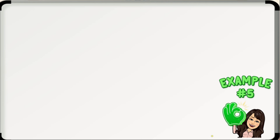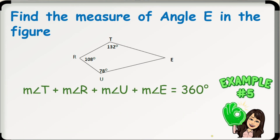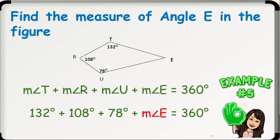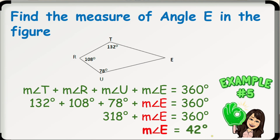Example number 5: Find the measure of angle E in the figure below. The sum of the measures of the interior angles of a convex 4-sided polygon is 360 degrees. Adding the given measures in the figure: 132 degrees plus 108 degrees plus 78 degrees plus the measure of angle E equals 360 degrees. Combining like terms: 318 degrees plus the measure of angle E equals 360 degrees. Subtracting 318 from both sides, we have 42 degrees. Hence, the measure of angle E is 42 degrees.